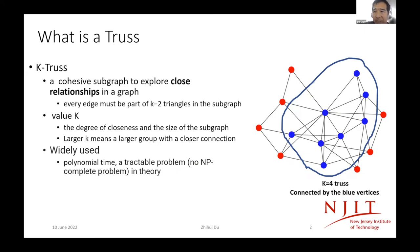But since the graph has become even more large, faster truss analytics algorithms are necessary. Here, the right side is a very simple example of a truss. The blue path connected together is a K-4 truss. It means that for every edge, it has at least two triangles.